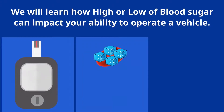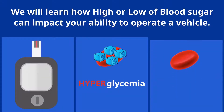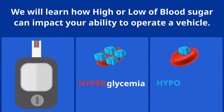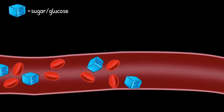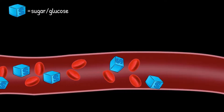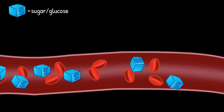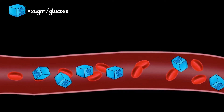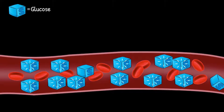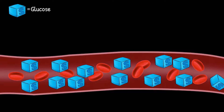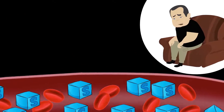High blood sugar is called hyperglycemia. Low blood sugar is called hypoglycemia. Your blood maintains a normal amount of sugar in order to supply its cells with energy. However, if the body's blood sugar becomes too low or too high, the body will react with physical symptoms.